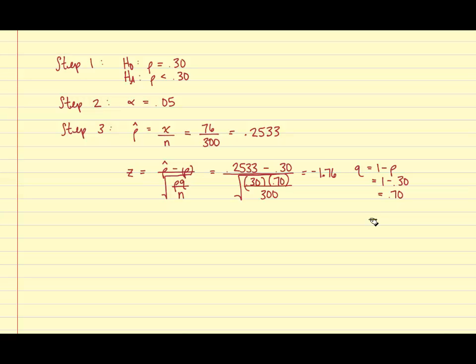For step 4, we're going to determine the critical values. Using this approach, alpha is equal to 0.05. And the symbol used for the alternative hypothesis is less than. Therefore, we have a one-tailed test with 0.05 in the left tail.